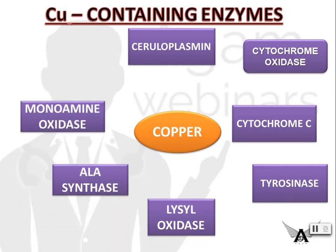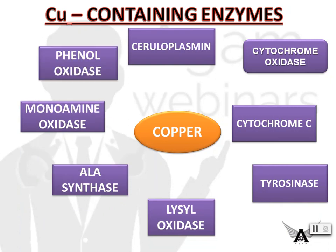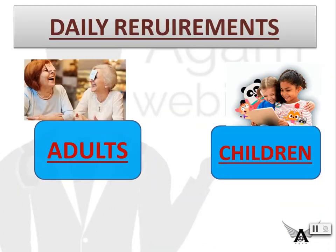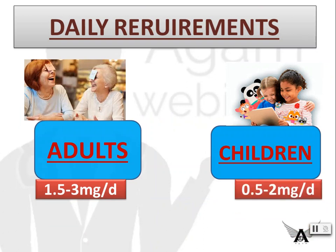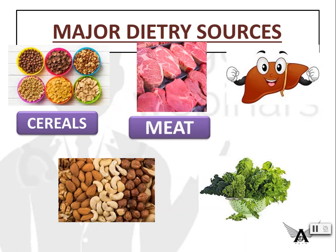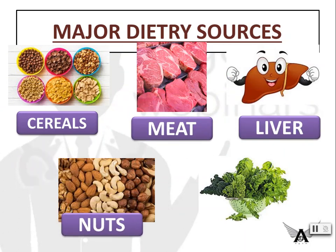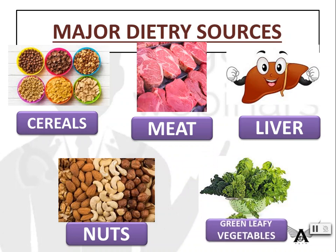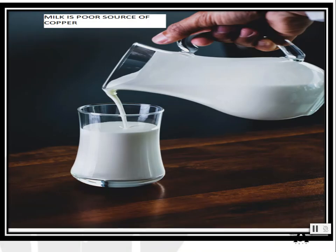Daily requirements for adults is 1.5 to 3 mg per day, and for children it is 0.5 to 2 mg per day. Major dietary sources are cereals, meat, liver, nuts, and green leafy vegetables. Note that milk is a poor source of copper.